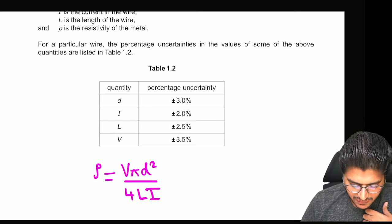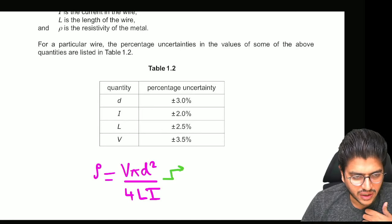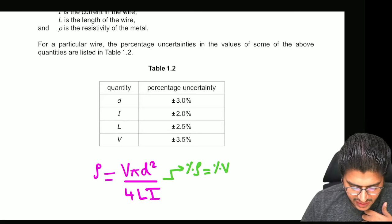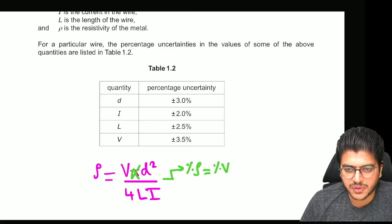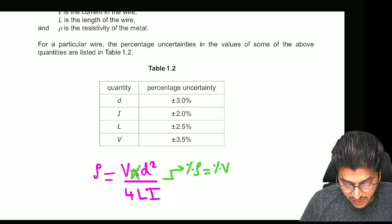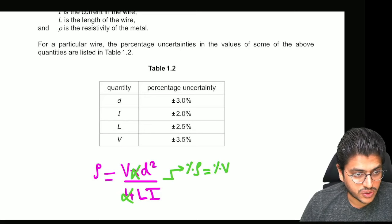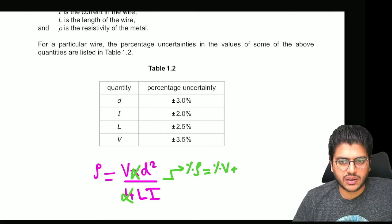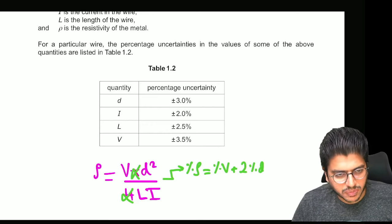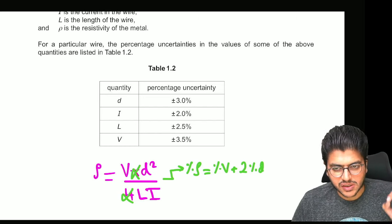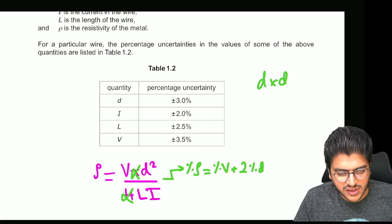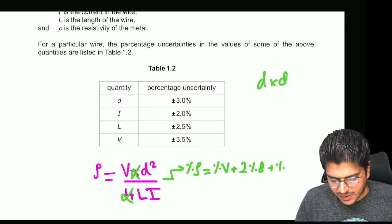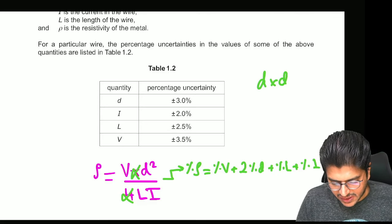Once you made it the subject and you want to write out the percentage error. In percentage errors you write percentage ρ equals percentage V. Pi is ignored because in percentage errors the constants don't come. And 4 is also ignored because constants don't come. Plus this is D squared. So you know that you have to bring the power down. So you write that as 2 percentage D because D square means that D came twice. So the error of D has to be counted twice.